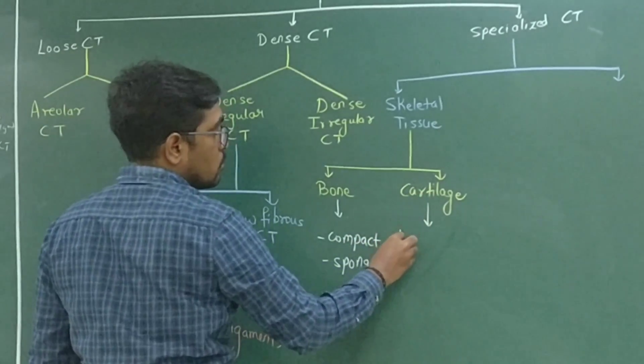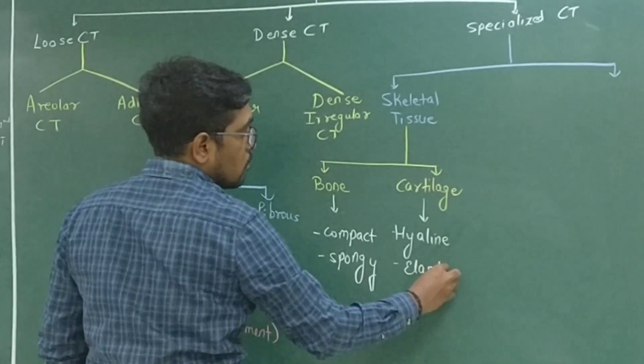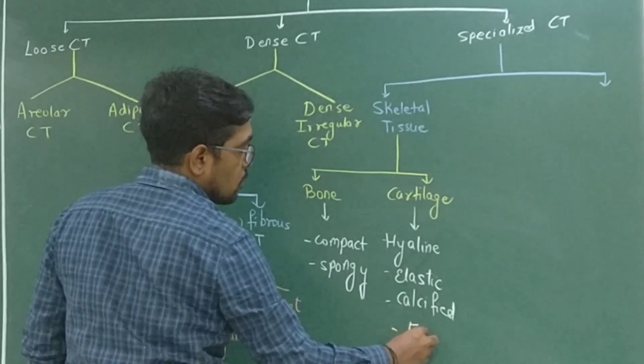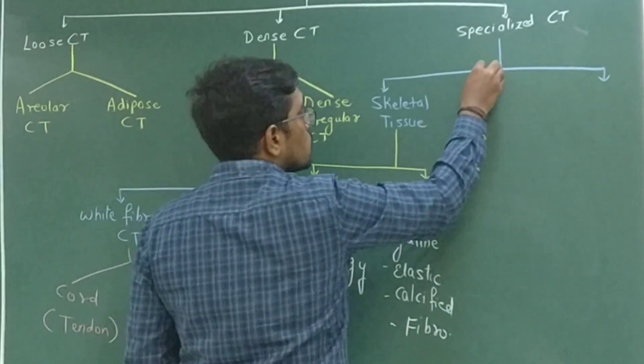When we talk about cartilage, cartilage are of different types. It includes the weakest, that is the hyaline cartilage, elastic cartilage, calcified cartilage, and the hardest one, the strongest one, that is fibrocartilage.